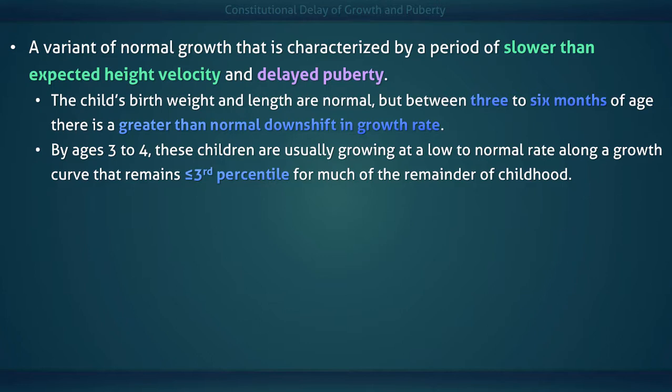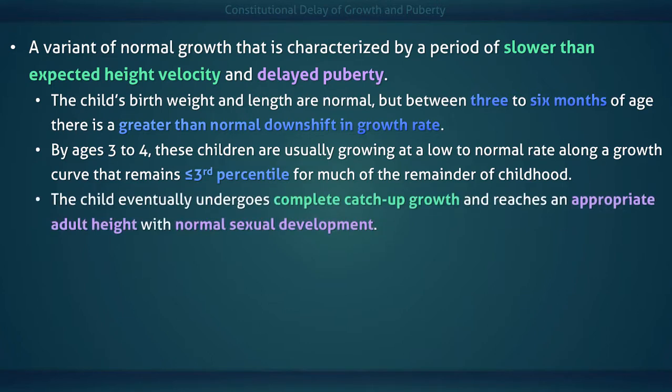Their growth curve remains at or below the third percentile for much of the remainder of their childhood. The child eventually goes through a rapid growth spurt, crossing percentiles, and eventually reaching an appropriate adult height — that is, a height within the range of their genetic potential.